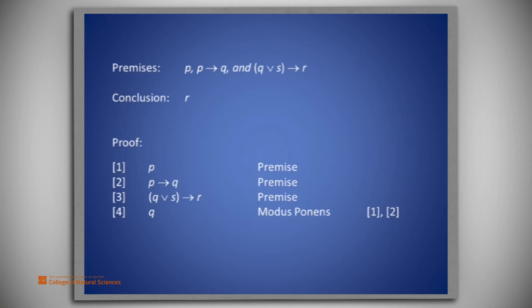Now, we see line 3 could get us to R. That's the conclusion we seek. But we don't have Q or S right now. We only have Q. But simply by using the addition rule, we can conclude Q or S for any S. That's addition from line 4. Now, we're ready to use modus ponens one more time from line 3 to get line 6, which is R, the conclusion, modus ponens applied to lines 3 and 5.